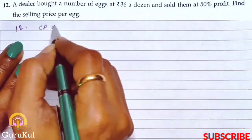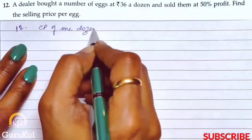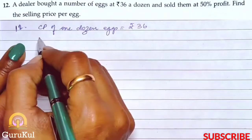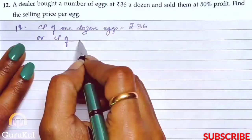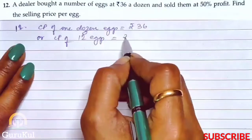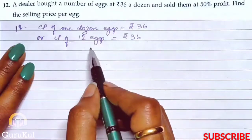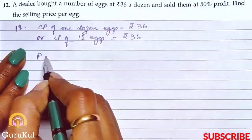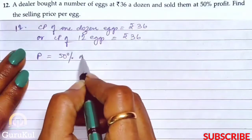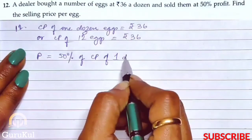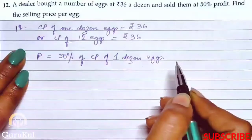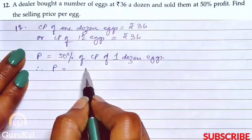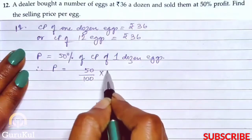So, CP of 1 dozen eggs is equal to rupees 36. We can also write it as: CP of 12 eggs is equal to rupees 36, because 1 dozen equals 12. Now, it has been mentioned that the dealer made a profit of 50%. So, profit is equal to 50% of CP of 1 dozen eggs, which is 50% of 36.